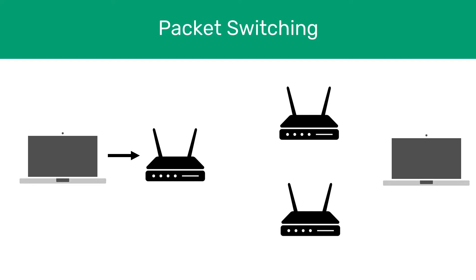Sending data using packets is called packet switching, and it is one method for transferring data over networks. TCP/IP is a packet switching protocol, so this is what the internet uses. No fixed path is created between the communicating devices — each packet can take a different route to reach its destination. An alternative would be circuit switching, where a single circuit is established and a steady stream of data is sent. Packet switching was proved to be the better option in the 1960s.